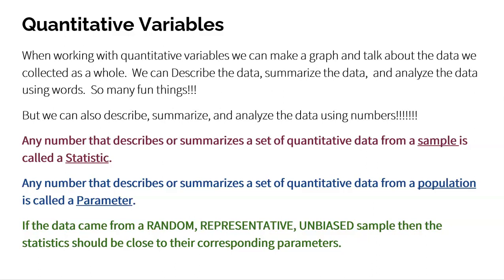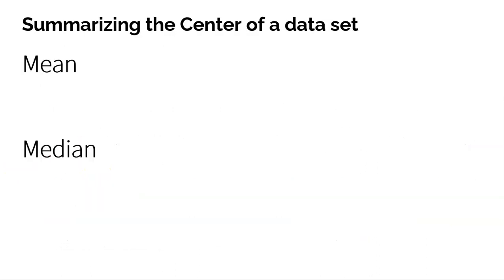Here's the key thing: if the data came from a random, representative, unbiased sample, then the statistics should be close to their corresponding parameters. But if it came from a sample, it's called a statistic. So we're going to be talking a lot about statistics in this video, and the statistics we want to focus on are ones that can tell us about the center of our data.